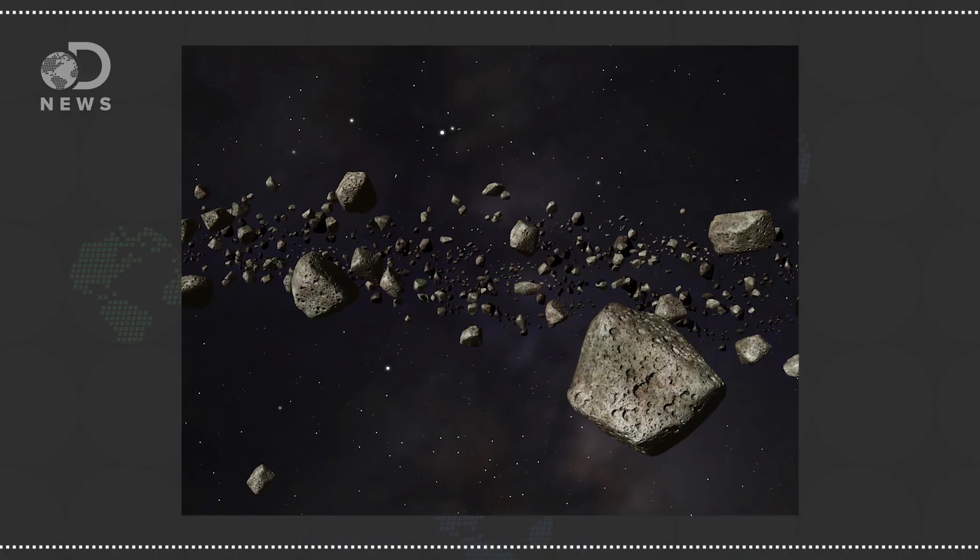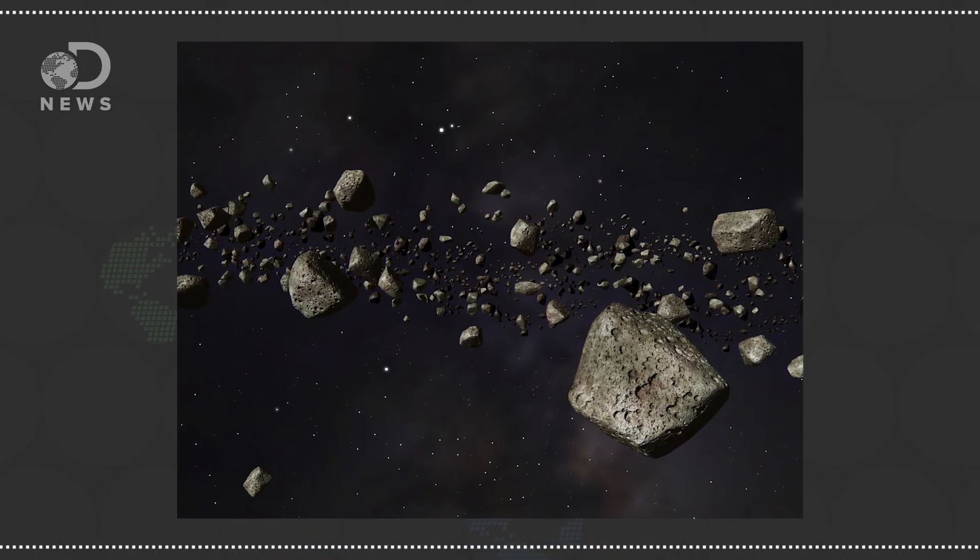A key plot point in the original Star Wars story was the destruction of the planet Alderaan by the Death Star as a show of force to the rebel scum. Then, after the destruction, an asteroid field formed around Alderaan's star. But come on, would all this really happen?